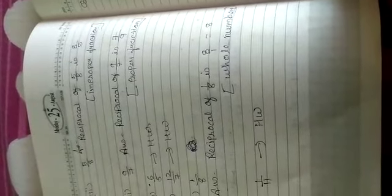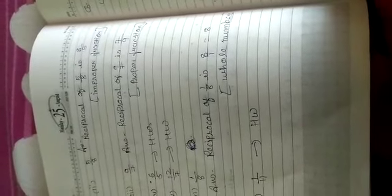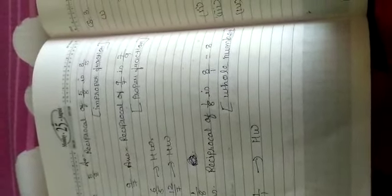9 upon 7. Reciprocal of 9 upon 7 is 7 upon 9. It is proper. Now next two, it is in homework. Now, sixth one: 1 upon 8. What is the reciprocal of 1 upon 8? It is 8 upon 1. So answer is 8. It is a whole number. Seventh one is in homework.